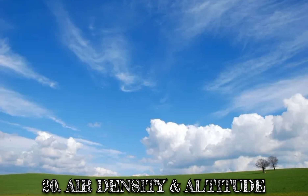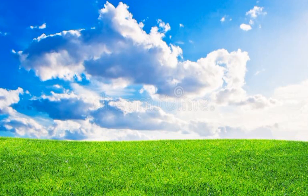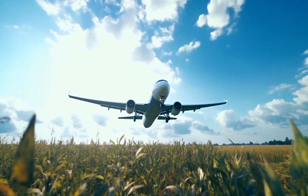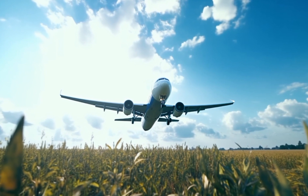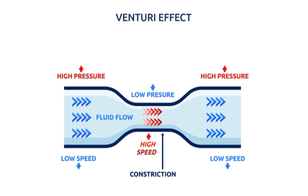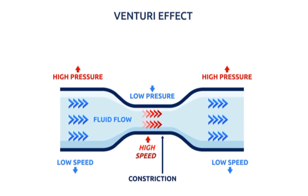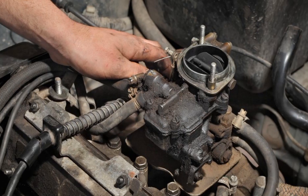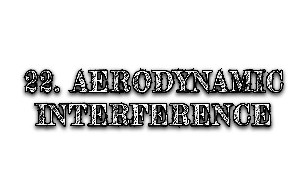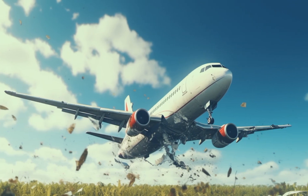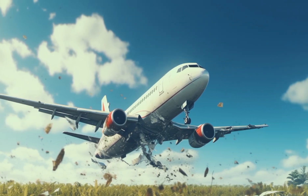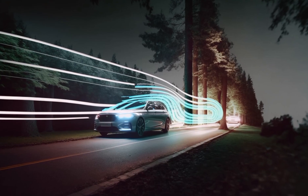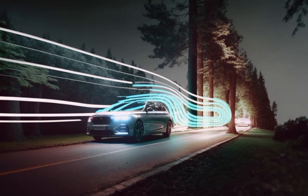Air density and altitude: density refers to how packed the air molecules are. At higher altitudes, air is less dense, which affects engine performance and lift. Venturi effect: when air flows through a narrow space, its speed increases and pressure drops — this principle is used in many devices, like carburetors. Aerodynamic interference is when the airflow around one part of an object affects the flow around another part; for instance, the flow around a car's wheels can affect its overall drag.